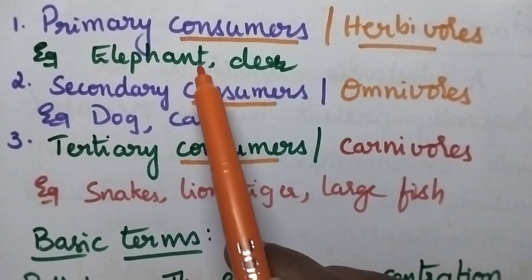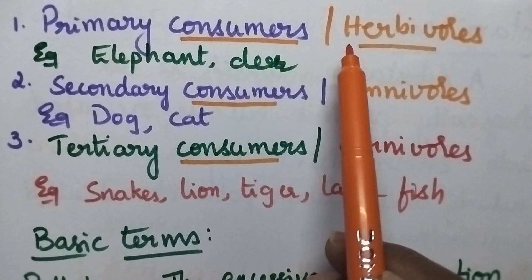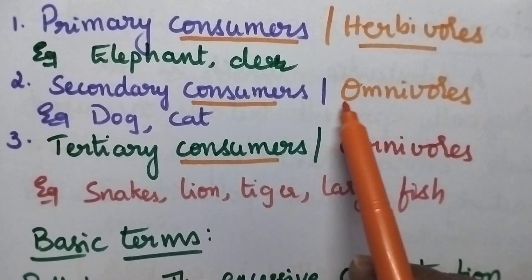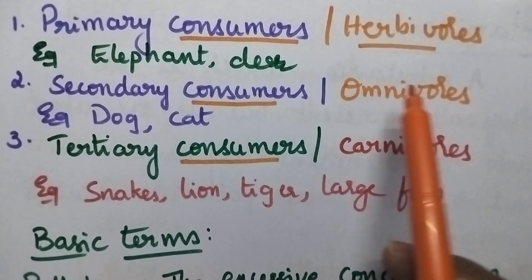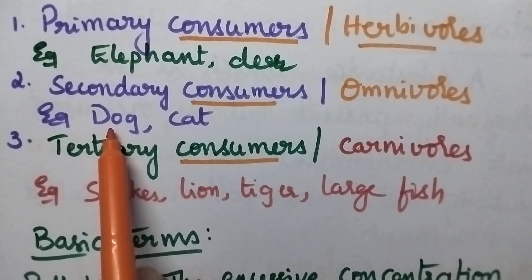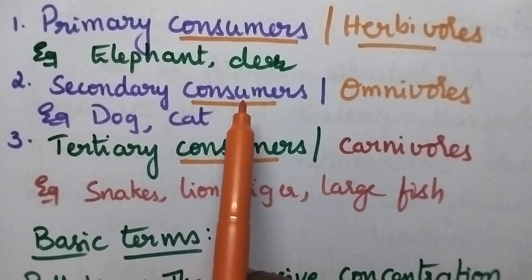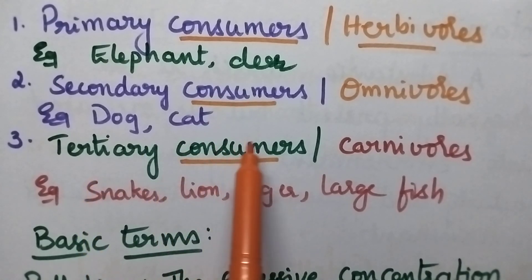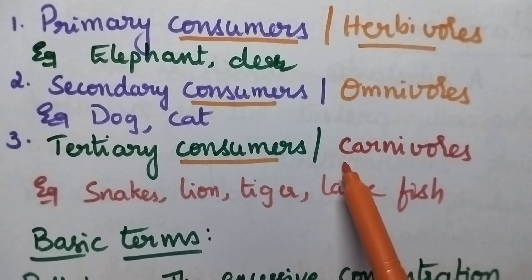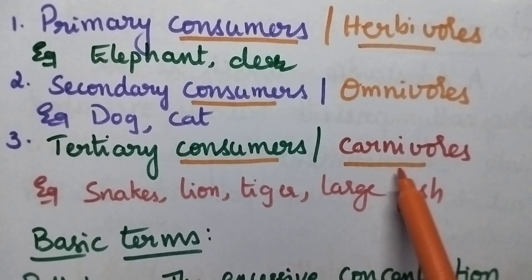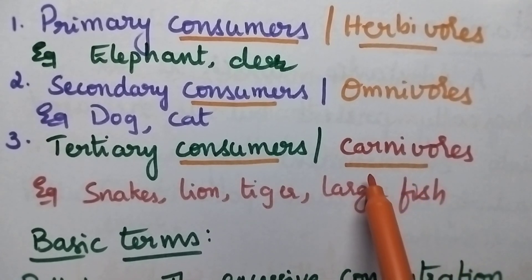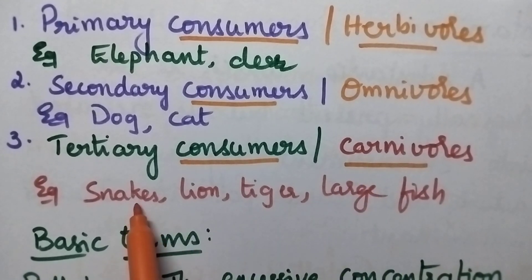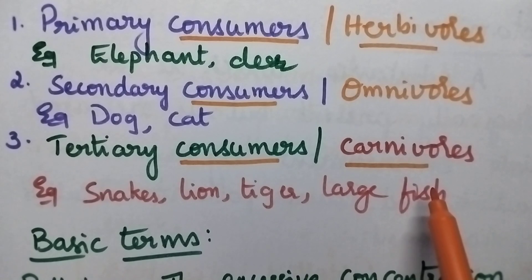Secondary consumers are called omnivores — they are both plant and meat eaters, and include dog, cat, etc. Coming to the tertiary consumers, they are called high-level consumers, or carnivores — simply meat eaters. They include snakes, lion, tiger, large fish, etc.